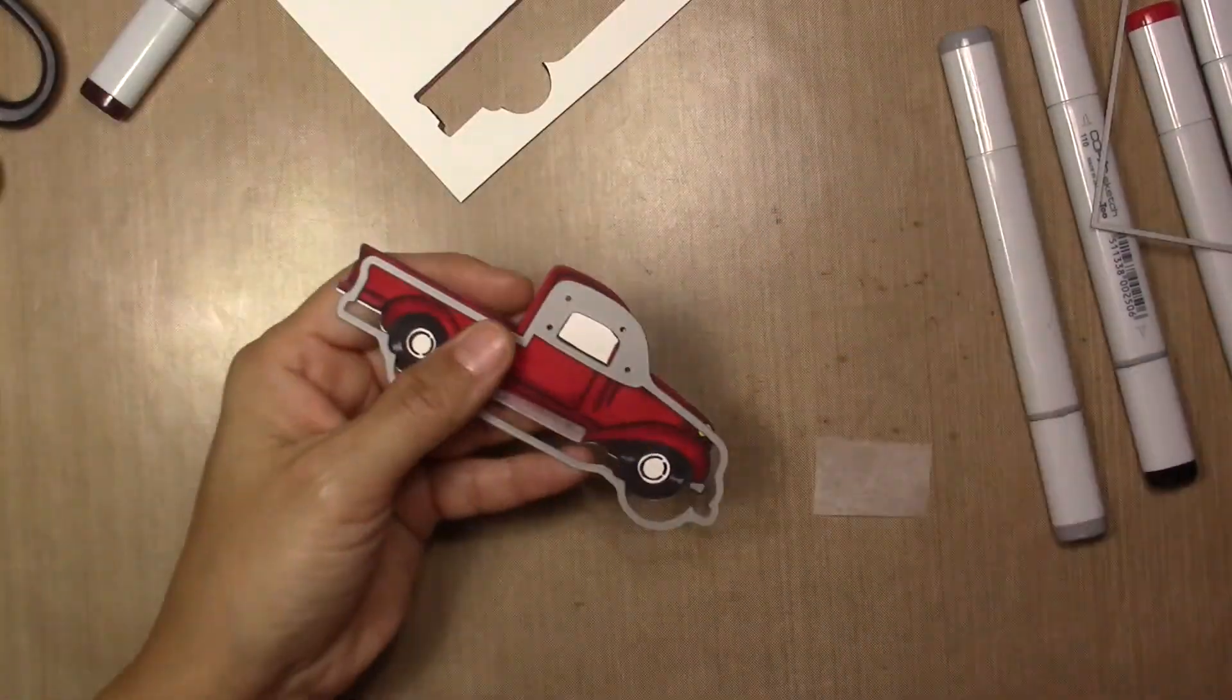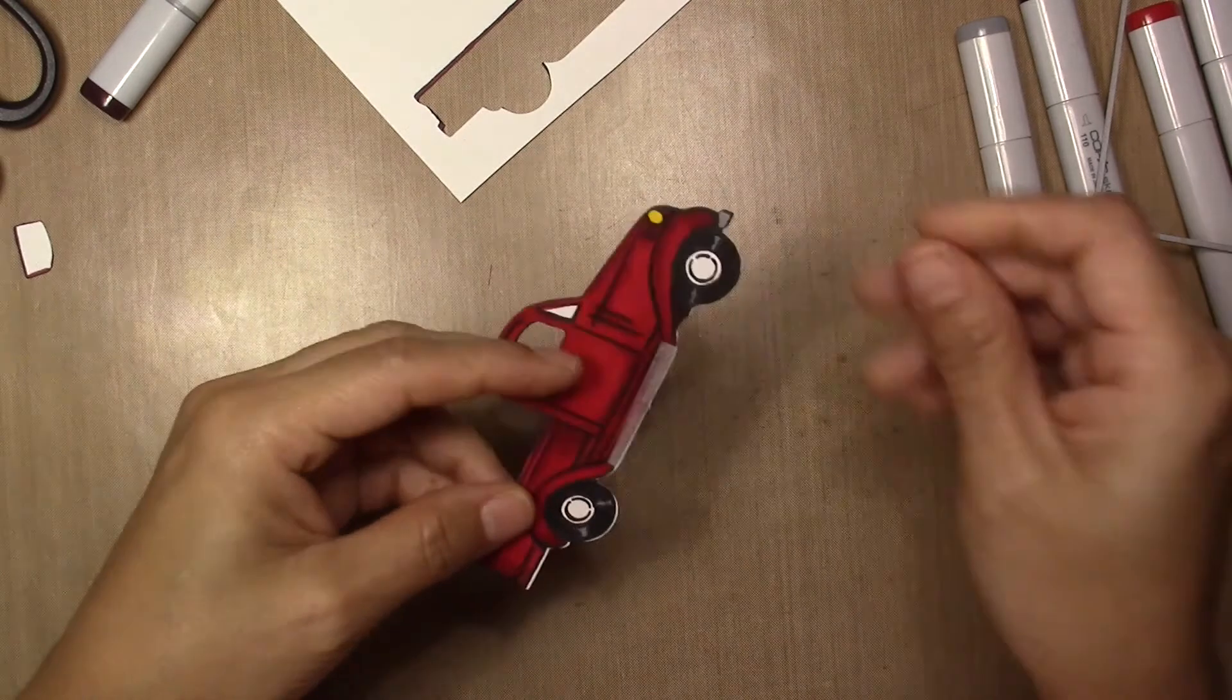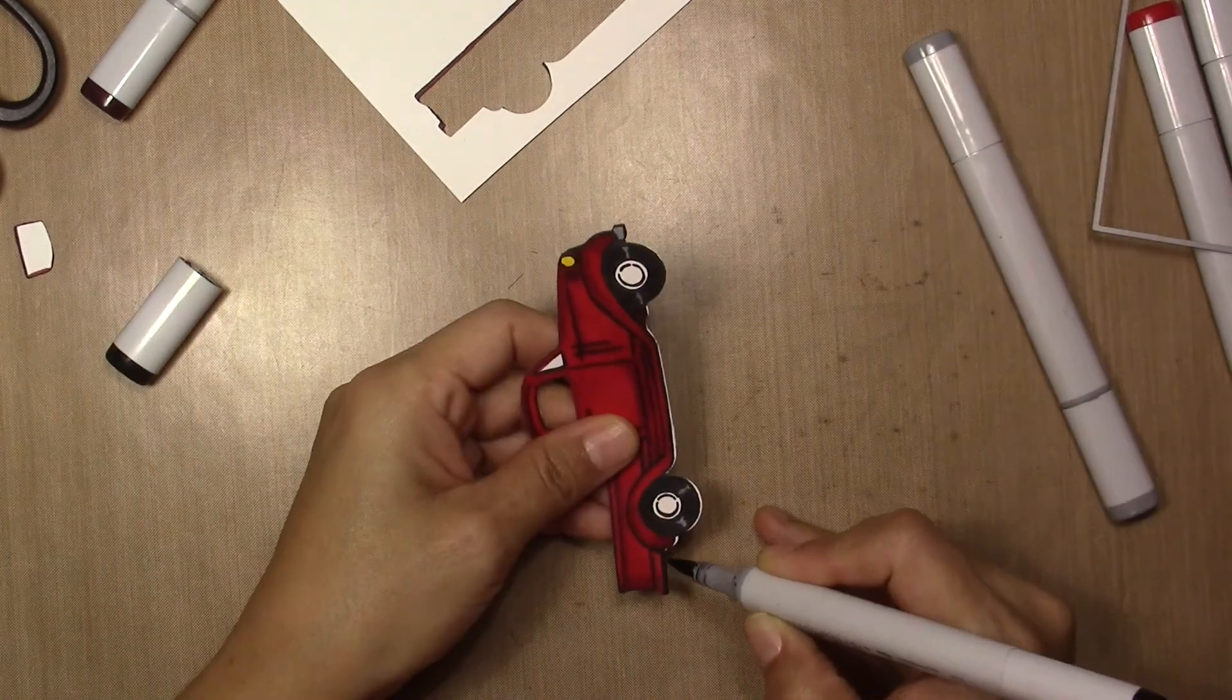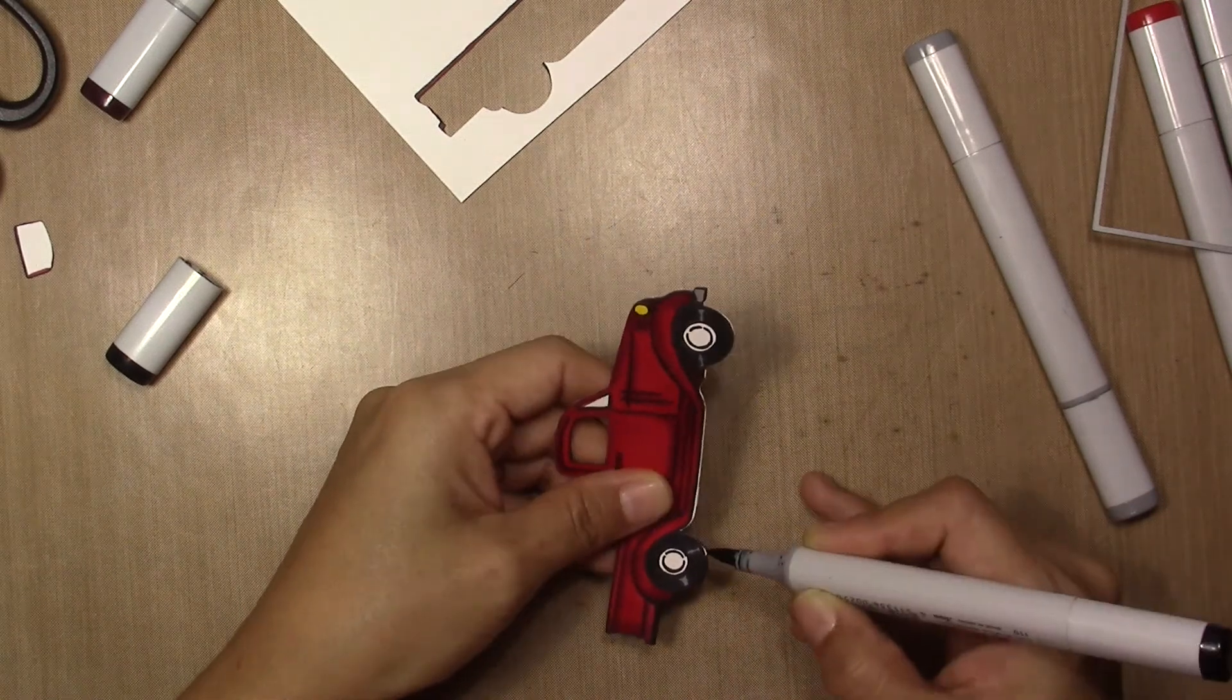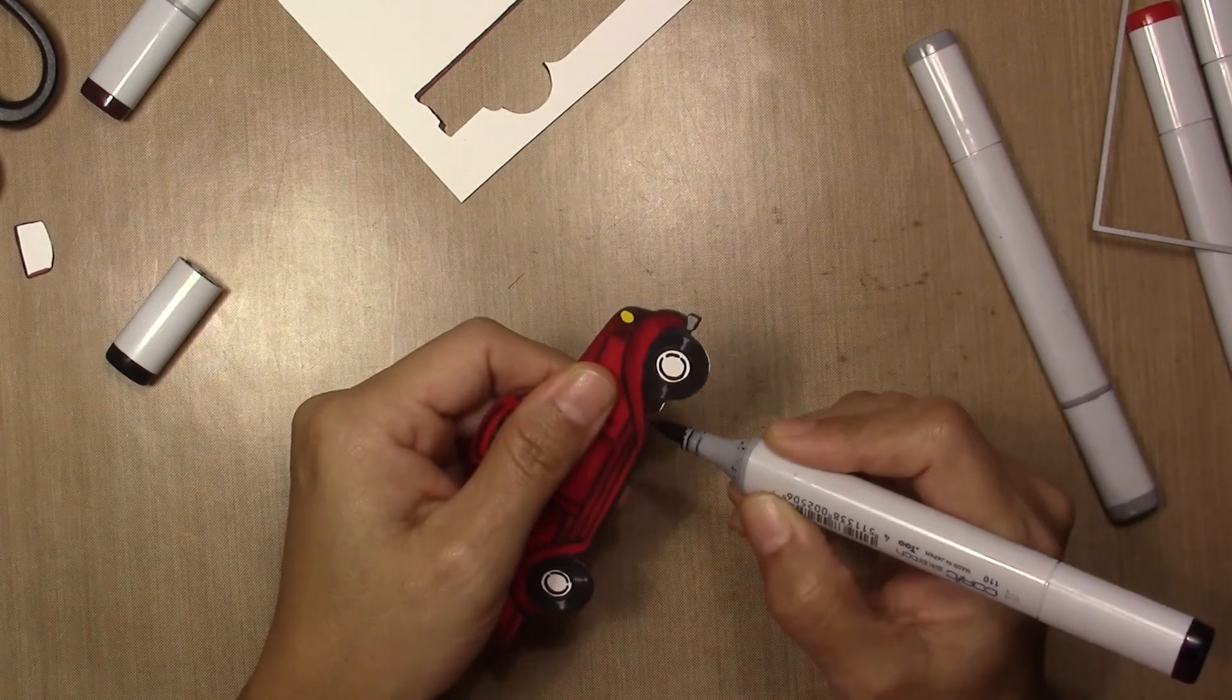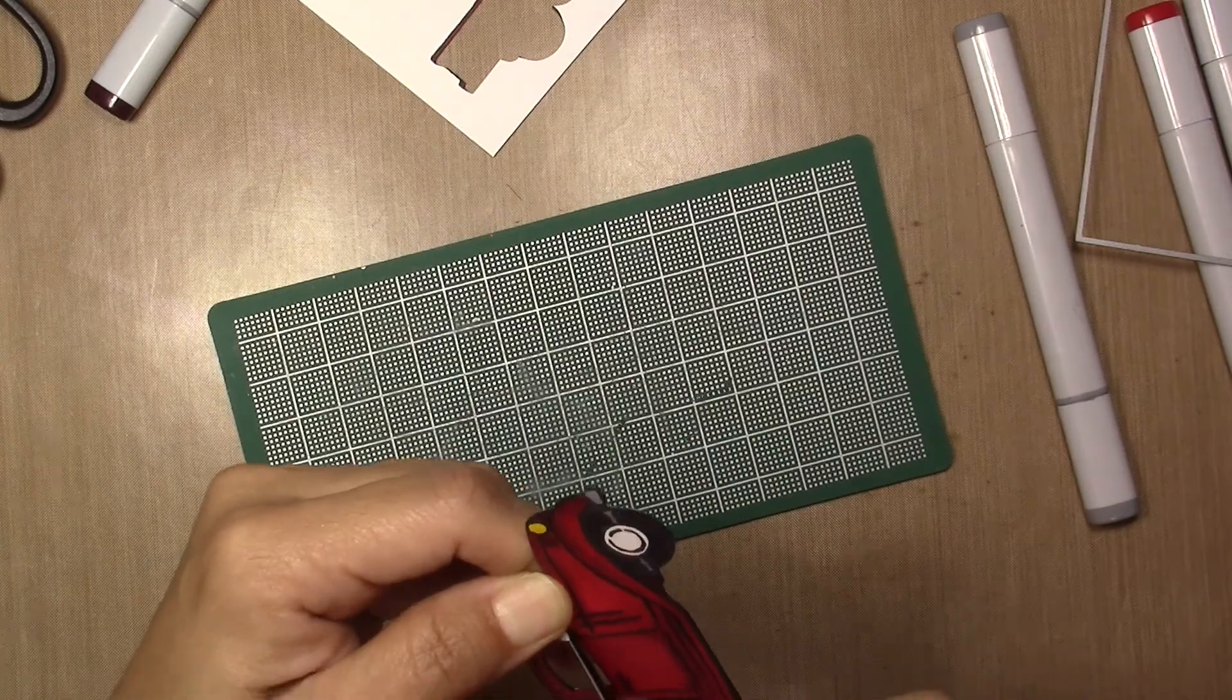After I finish coloring, I'm going to die cut with the die cut that comes in the stamp set. I'm going to do some retouching with my Copic Marker because I didn't center the die cutting very well.